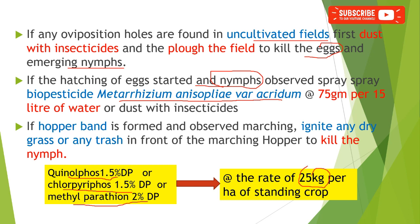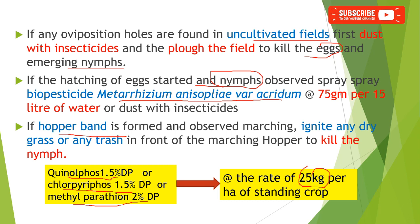If a hopper band has formed and is observed marching, then ignite dry grass or trash in front of the marching hopper band, which kills the nymphs of the locust.